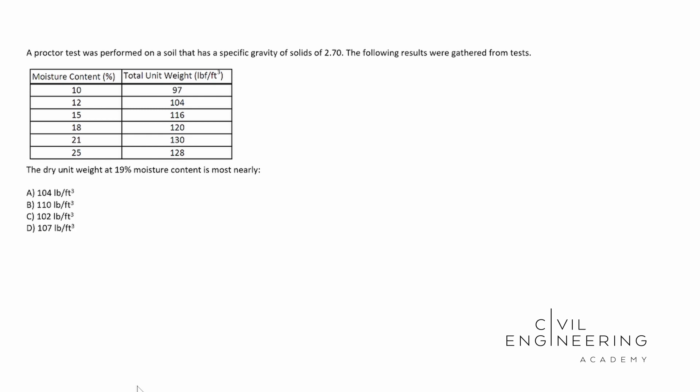A proctor test was performed on a soil that has a specific gravity of solids of 2.70. The following results were gathered from tests. We see our moisture content there. We see our total unit weight in pounds of force per cubic foot. And then the question says the dry unit weight at 19% moisture content is most nearly. And then we see our four options there.